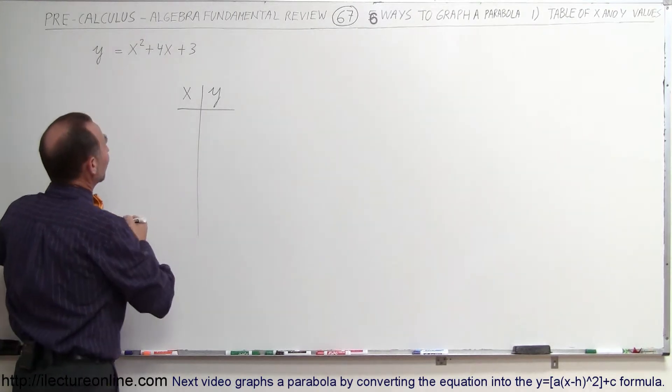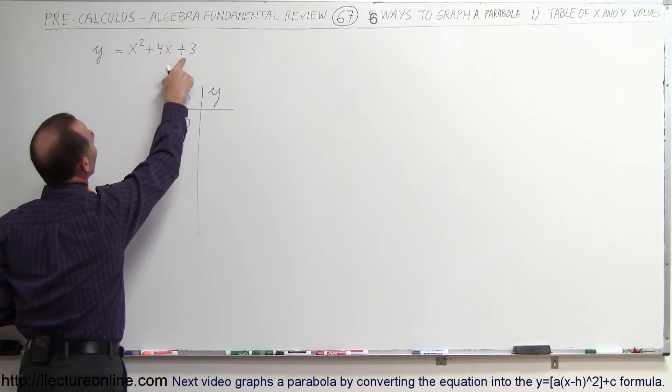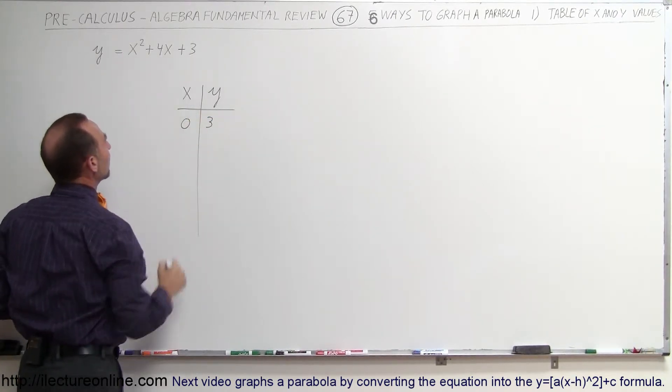So first, let's always start with 0. 0 is a good place to start. When x equals 0, we get y equals 0 plus 0 plus 3, so y equals 3. So that was easy.